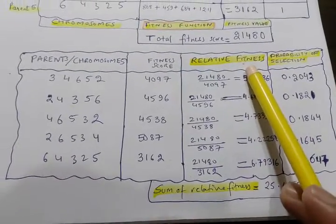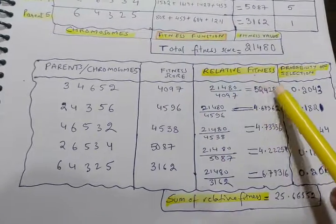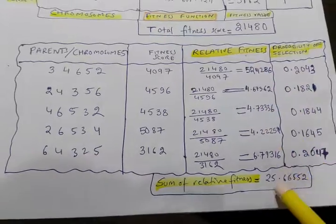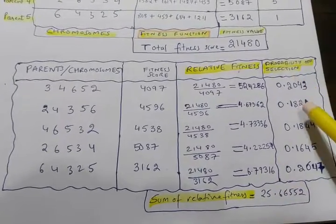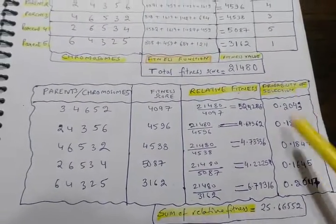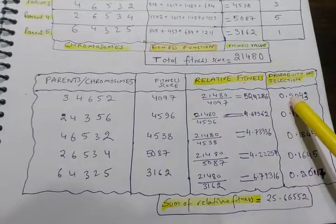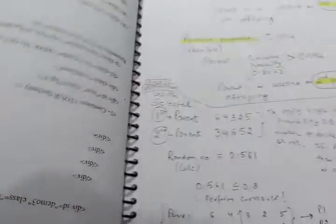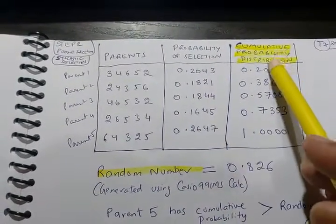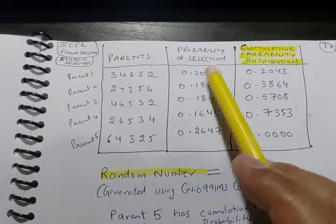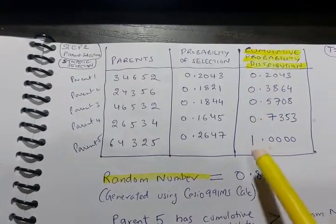For that, we find relative fitness by dividing each fitness score by the total fitness, then sum them up to get the total relative fitness score. Now divide each relative fitness with the total fitness score to get the probabilities. Now you will notice that rank one has the highest probability. Along with this probability of selection, we will make cumulative distribution probability which adds up to one.